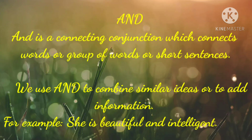Our next conjunction is 'and'. 'And' is a connecting conjunction which connects words or group of words or short sentences. We use 'and' to combine similar ideas or to add information. For example, she is beautiful and intelligent. As you can see, in this sentence, we have added two sentences together. 'And' is used where we have to add similar ideas or similar information.